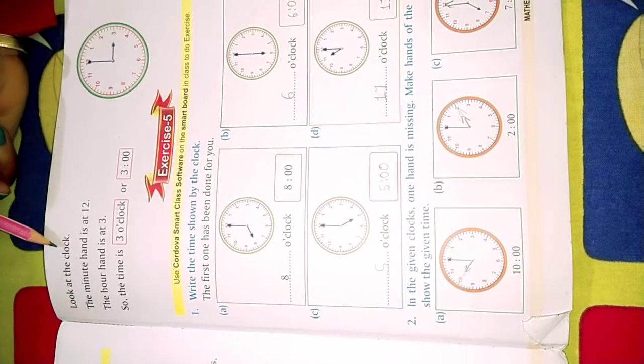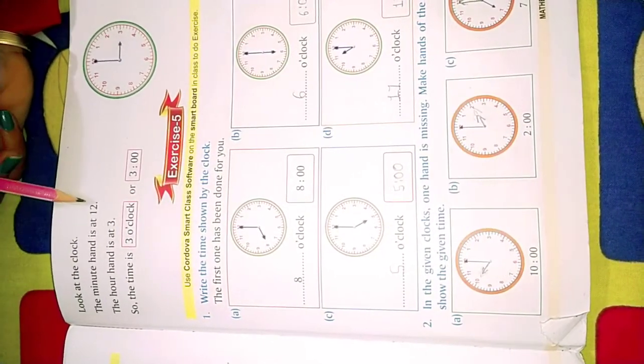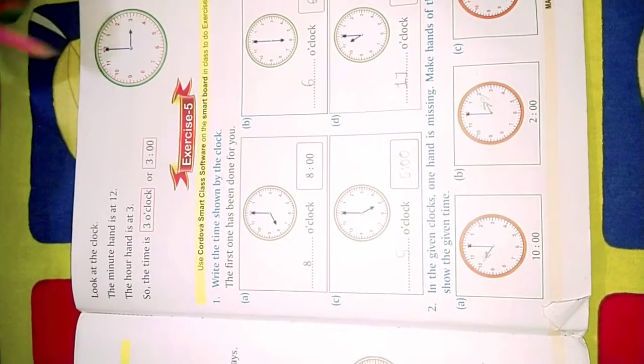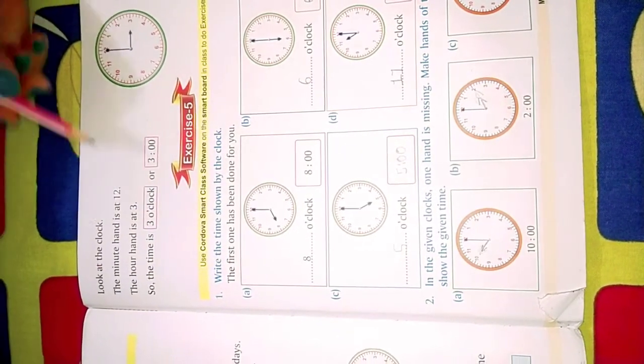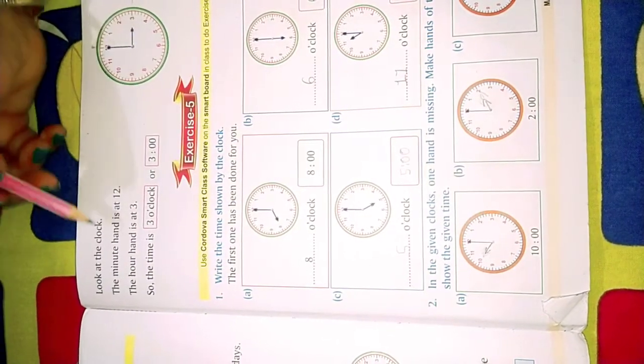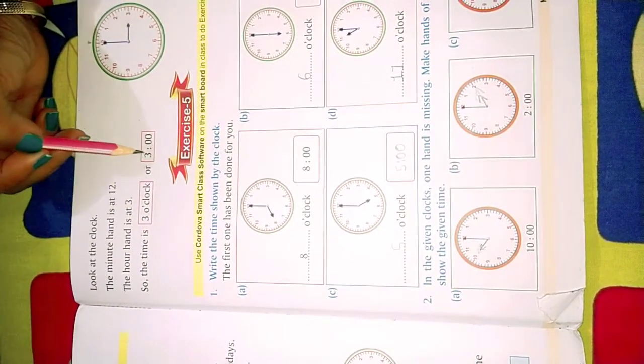Look at the clock. The minute hand is at 12, see the minute hand is at 12. The hour hand is at 3. So the time is 3 o'clock.